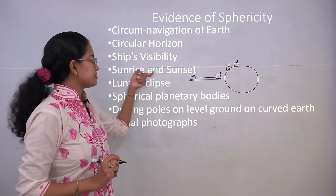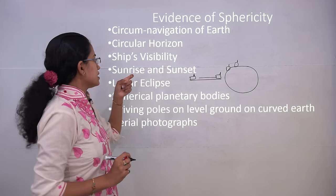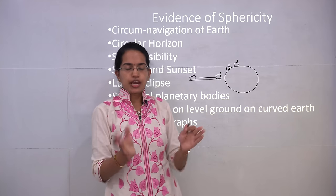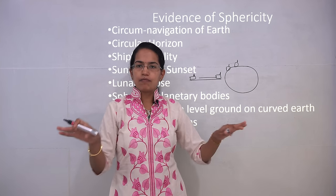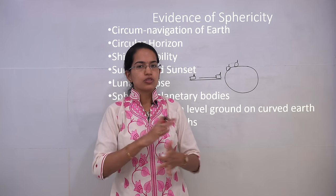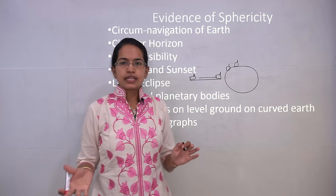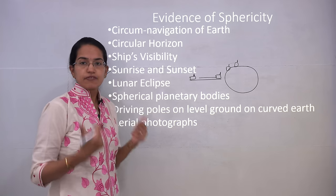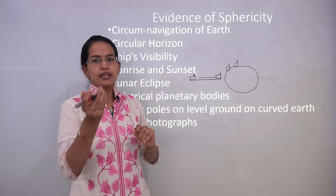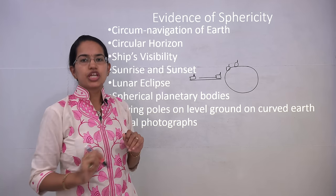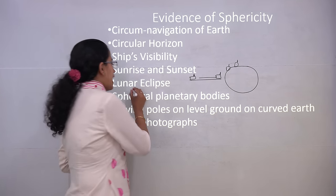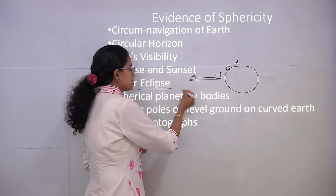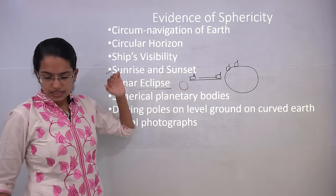Sunrise and sunset are another evidence. If Earth were not spherical, you would have complete sunlight or complete darkness over the whole Earth simultaneously, with no zones of brightness or darkness. During a lunar eclipse, the shadow cast on the Moon is spherical or elliptical — this shadow cannot come from a square or flat planet, confirming Earth is spherical.